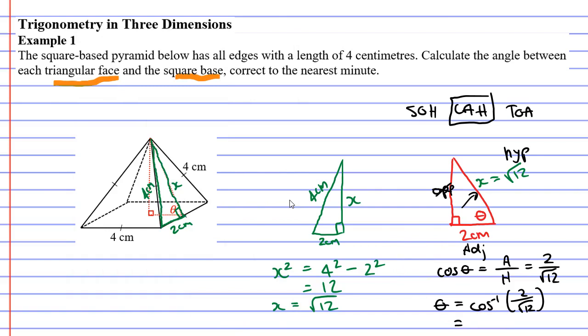54 degrees, 44 minutes. And that is the angle between the square base and the triangular faces on this pyramid. And that concludes example 1.